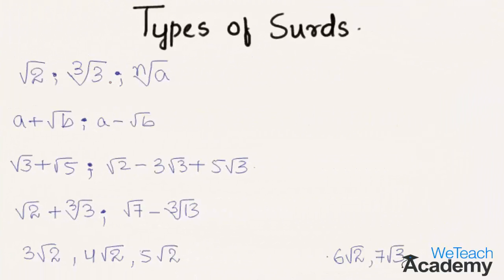Coming to the first example, we have surds which consist of single terms. So these are called simple or monomial surds.